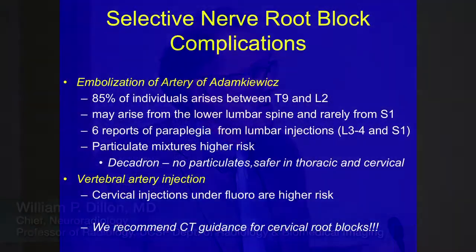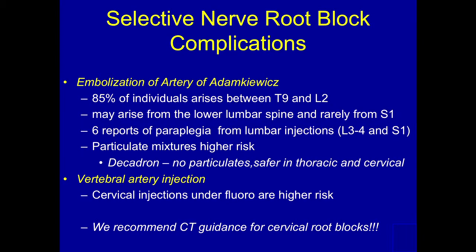What are we worried about? We're worried about embolization of the artery that supplies the spinal cord — the large artery that usually is between T9 and L2, but sometimes can arise from the lumbar and even the sacral area. So near our nerve roots that we're injecting, we have to worry about that, and in the cervical area about injecting the vertebral artery.